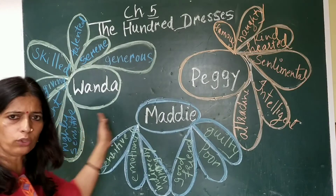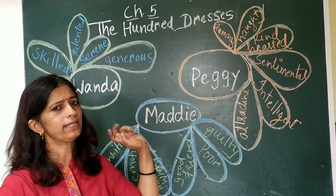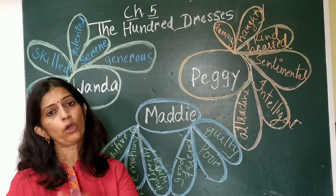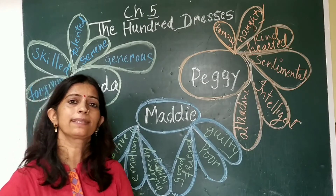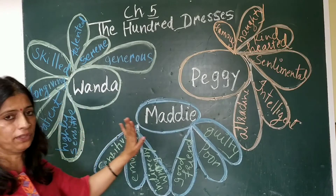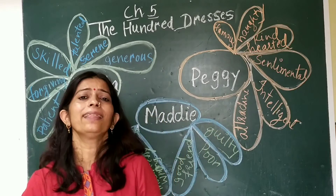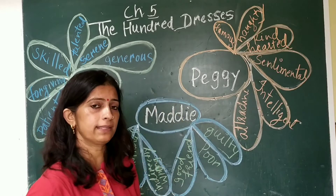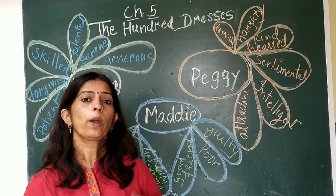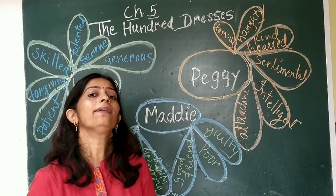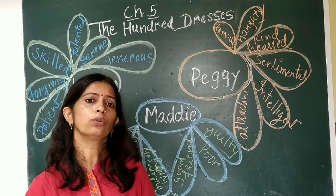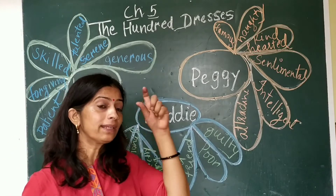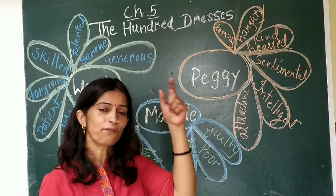She was a patient girl. Throughout the chapter, patience is seen in her. She did not say any wrong words to anyone. She did not defend herself against anyone, though she did not lose control either. She kept on improving her skills. She was also highly sensitive. She knew those girls were mocking at her, but she saw opportunity in those negative things and made them her skill — she made the dresses in the form of paintings.